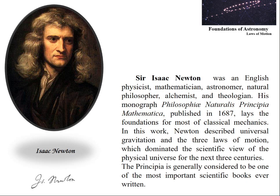From where Galileo left, Newton started. Sir Isaac Newton was an English physicist, mathematician, astronomer, as well as a natural philosopher. His monograph Philosophiæ Naturalis Principia Mathematica, published in 1687, laid the foundation of most of classical mechanics. In his work, Newton described universal gravitation and three laws of motion, which dominated the scientific view of physical universe for the next three centuries. The Principia is generally considered to be one of the most important scientific books ever written.